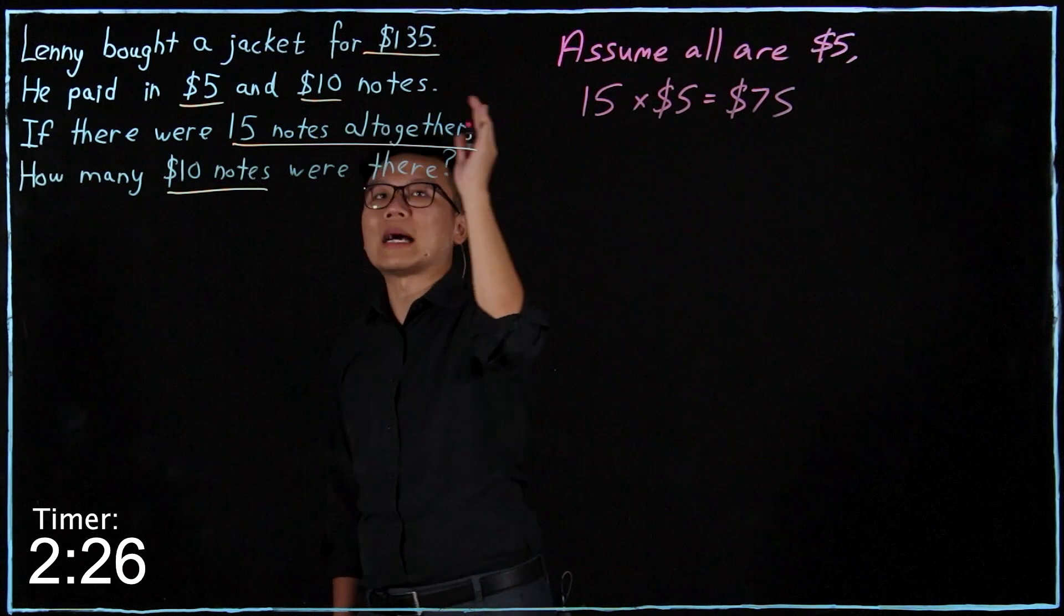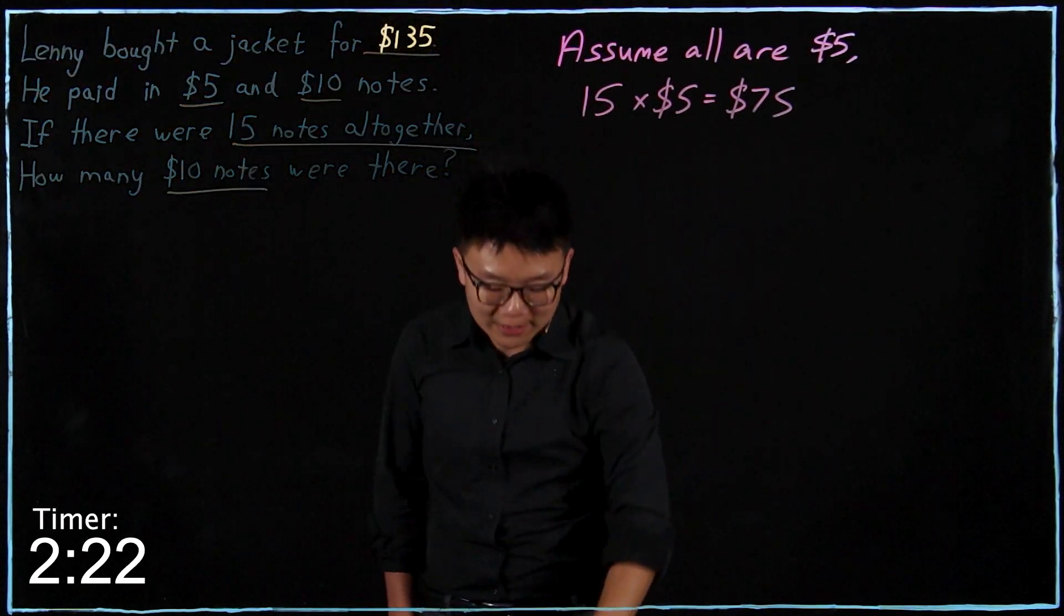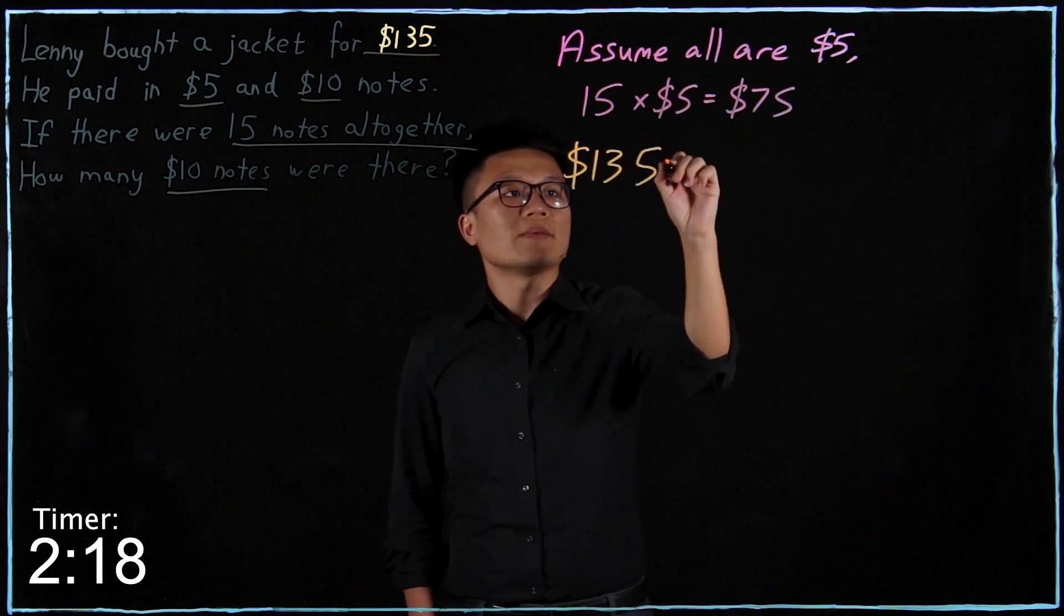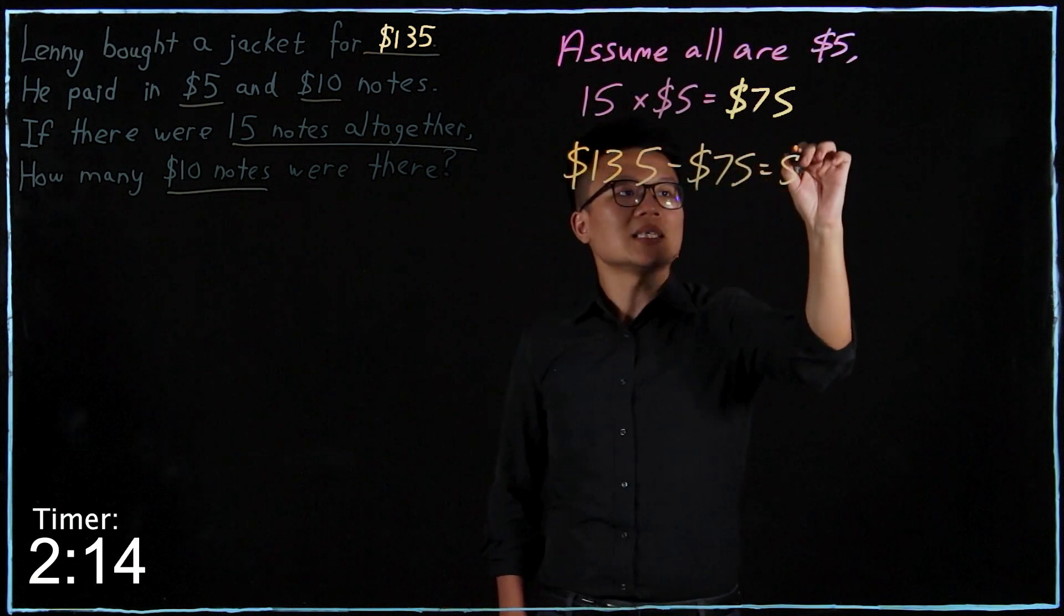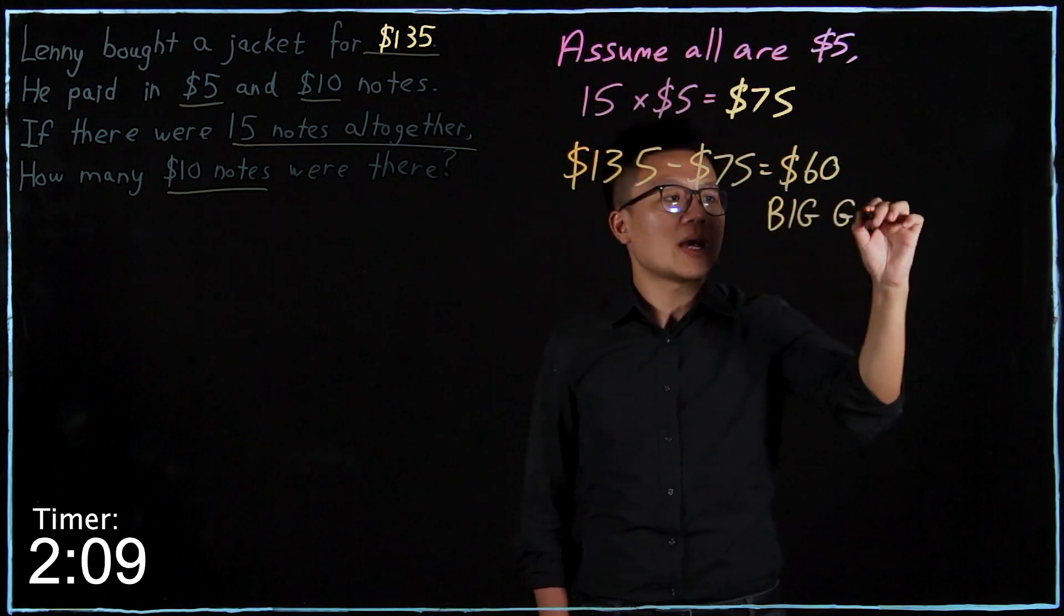Then I see, oh, I still have a shortfall because I'm supposed to spend $135, right? So $135, I take away $75. This is $60. So this is known as the big gap.